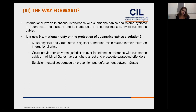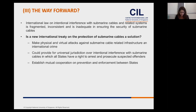Such a treaty could be based on the structure of the terrorism conventions. It could define a range of offenses including intentional damage to landing sites, submarine cables, and submarine cable-related infrastructure, and also include virtual attacks. It could provide for universal jurisdiction over intentional interference, giving all states the right to arrest and prosecute suspected offenders. It could require states to establish jurisdiction when the alleged offender is present in their territory and the state chooses not to extradite them, and include mutual cooperation on prevention and enforcement.